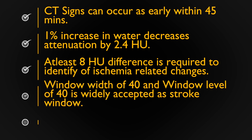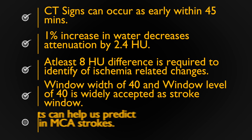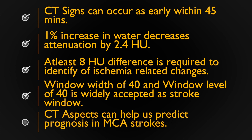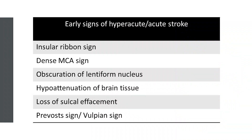At least 8 HU difference is required to identify ischemia-related changes. A window width of 40 and a window level of 40 is widely accepted as the stroke window. This ratio can help us predict the prognosis in cases of acute MCA stroke.